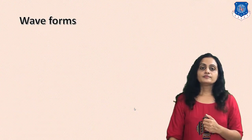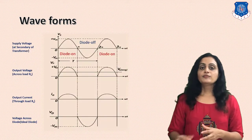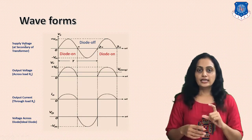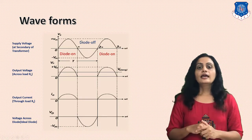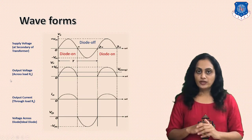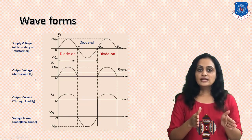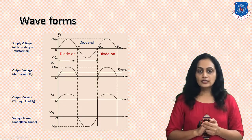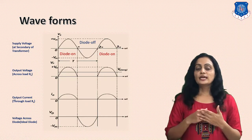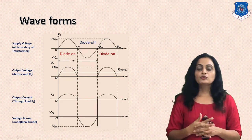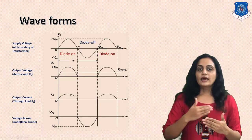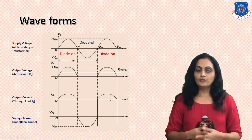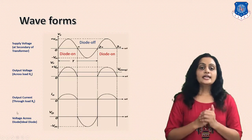Now we will see the waveforms for the half wave rectifier. The first signal is the input signal at the secondary — a sinusoidal AC signal. The second waveform is the output voltage: during the positive half cycle the output matches the input, and during the negative half cycle the output is zero. The third waveform is the current through the load, which follows the same pattern as the voltage — current flows during the positive half cycle and is zero during the negative half cycle.